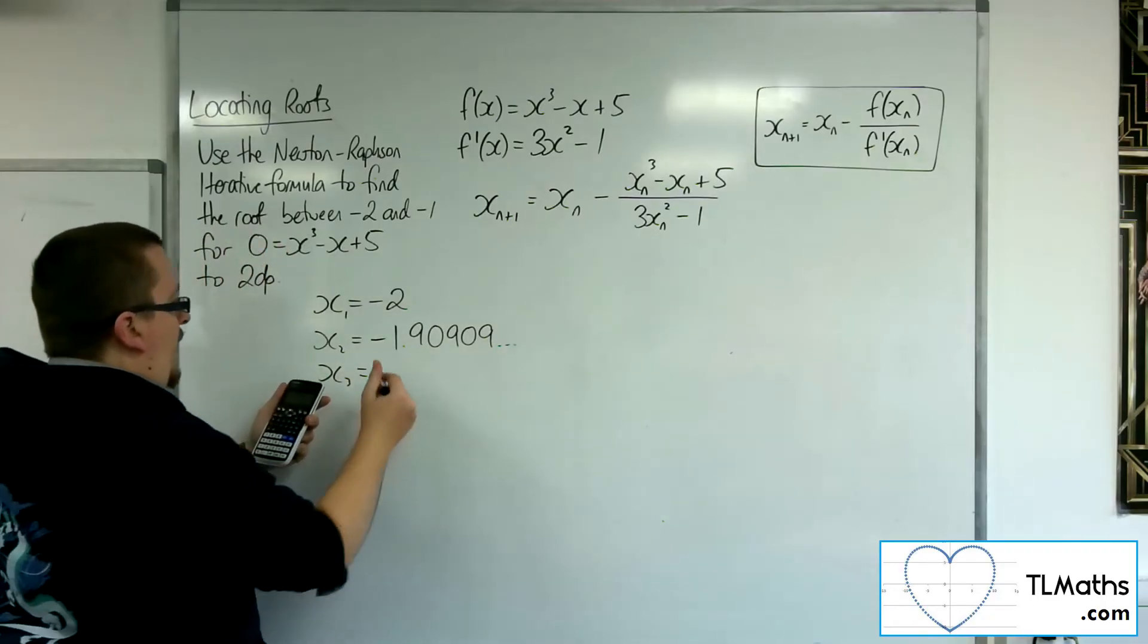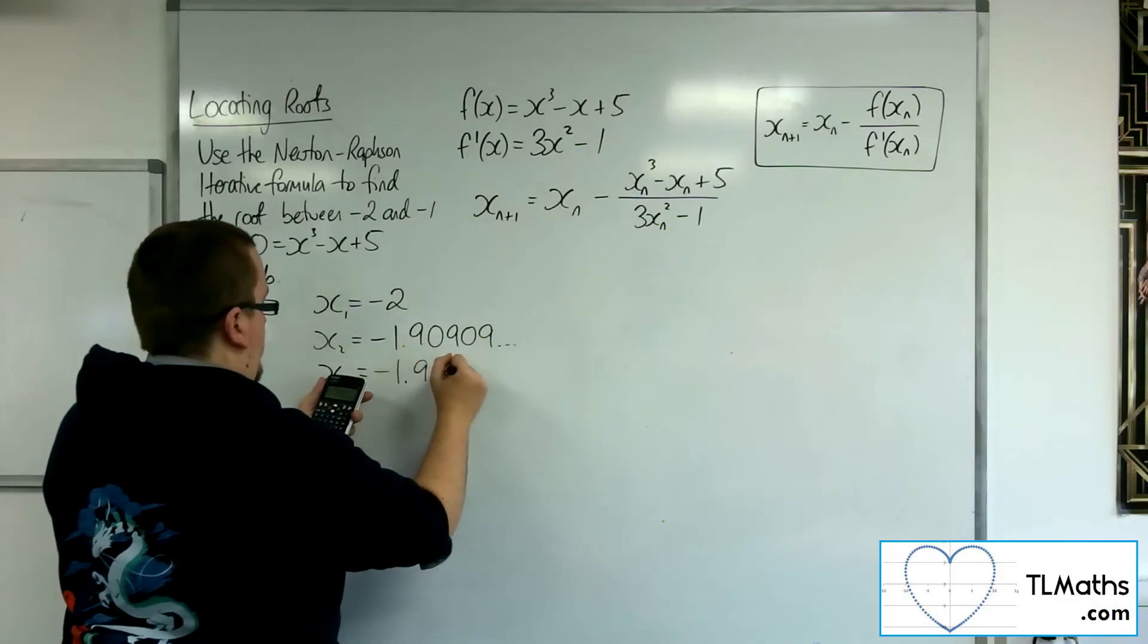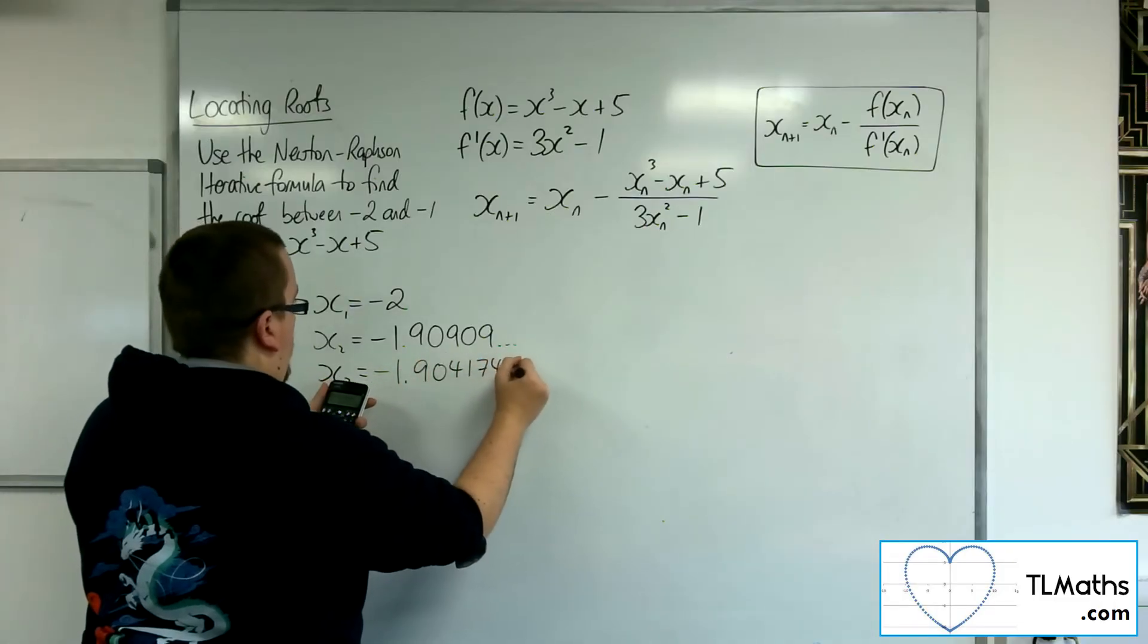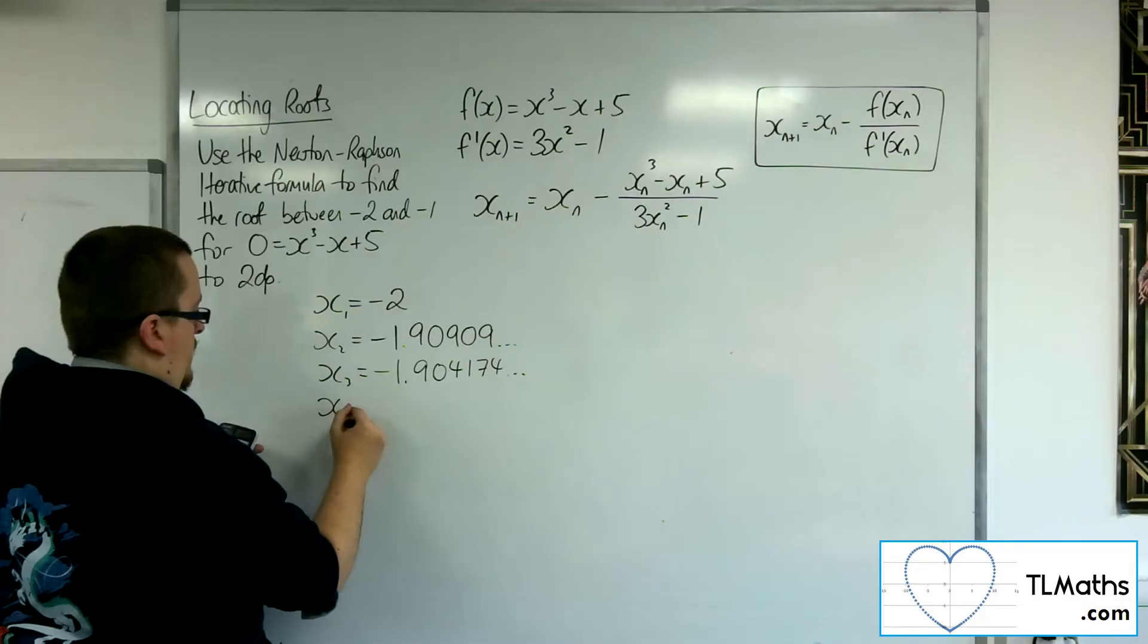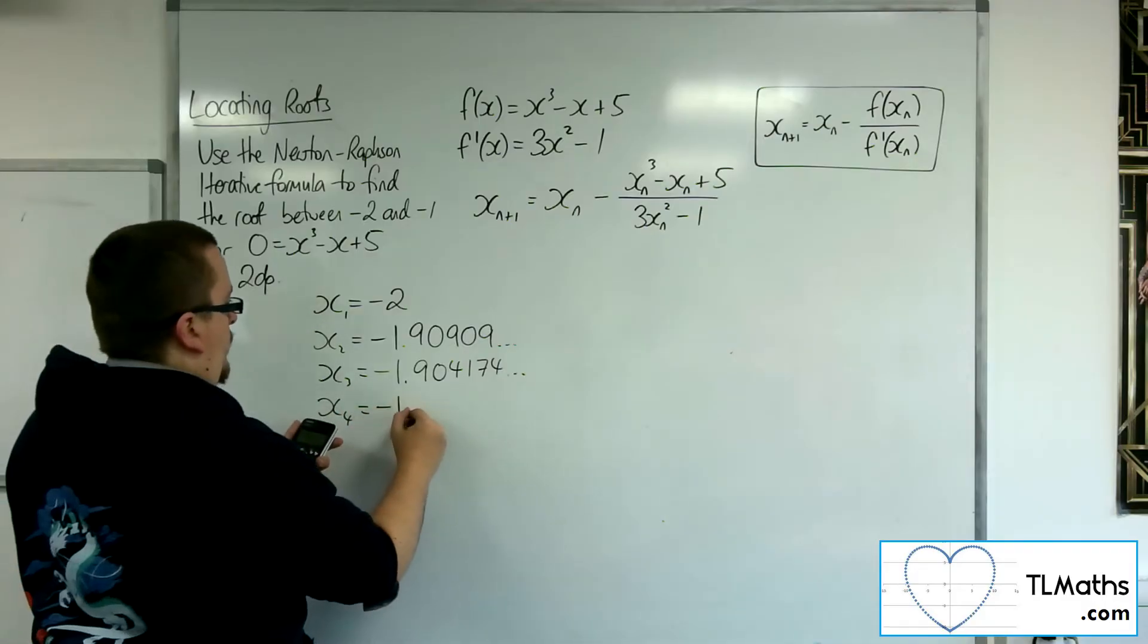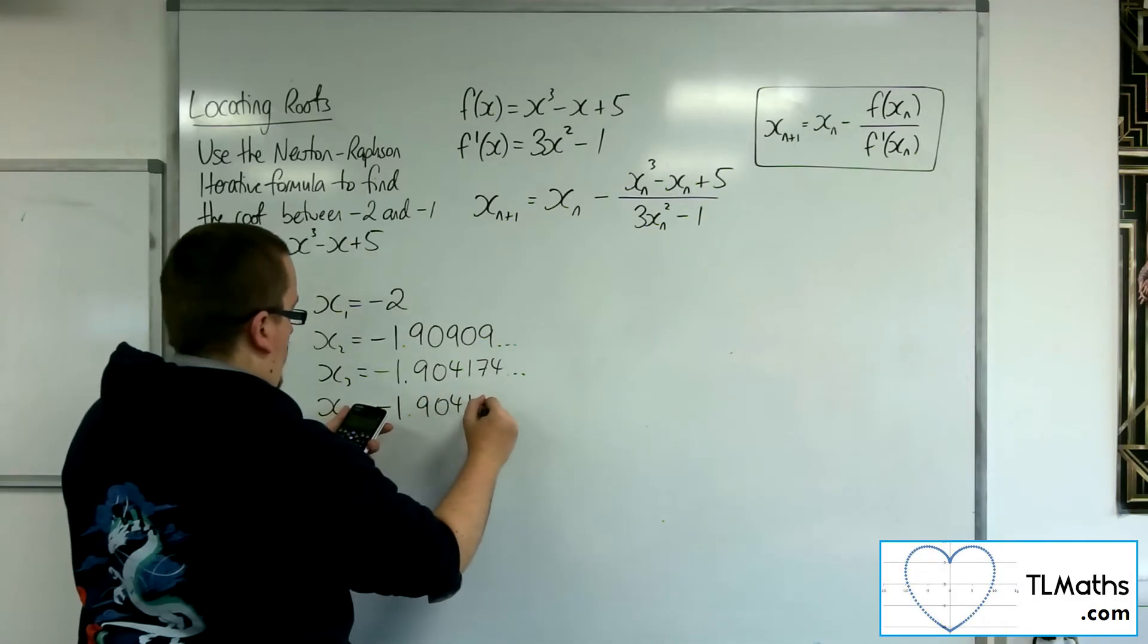Press equals again, I can get the next value, so -1.90417486. Press equals again, -1.90416.